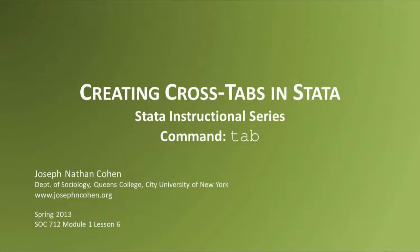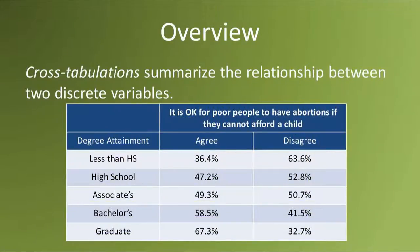In this video, I'll show you how to make cross-tabulations in Stata. Cross-tabulations summarize the relationship between two discrete variables. In this example, I am comparing the distribution of people's educational attainment and their beliefs on abortion for reasons of poverty. The comparison suggests that people with higher education are more tolerant of others electing to have abortions for reasons that they can't afford a child.